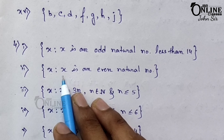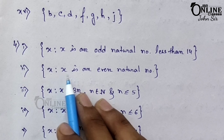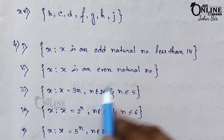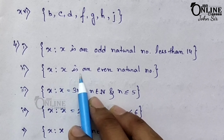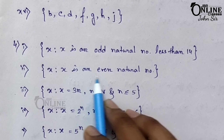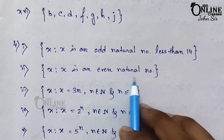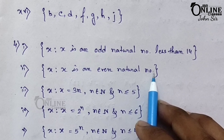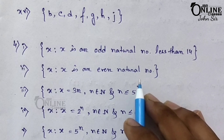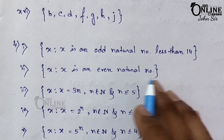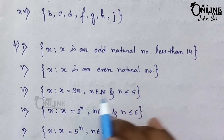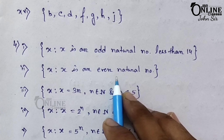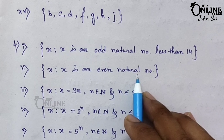Number 2: {2, 4, 6, 8, ...}. That means x such that x is an even natural number. Since there are dots after 8, there is no last number, so any even natural number is included.